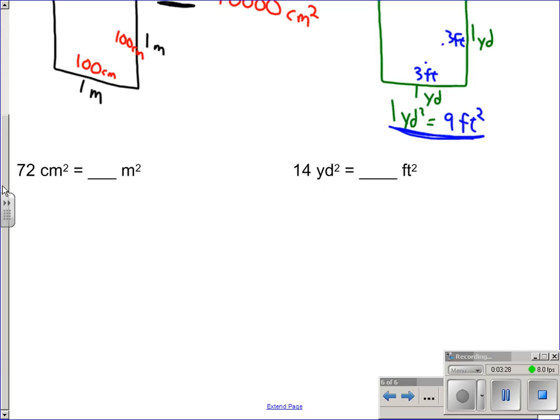The question is we have 72 square centimeters. How many square meters is that? What we're going to do is set up proportions: 72 centimeters squared to x number of meters squared.